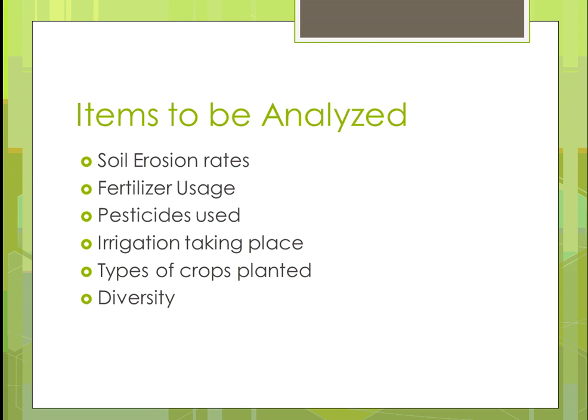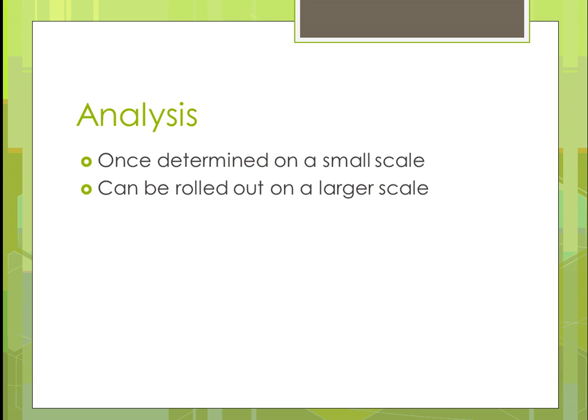Some of the things we should look at and analyze are soil erosion rates — how much of the dirt we're farming is eroding off so we can't use it — fertilizer usage, how much is synthetic versus natural, and similarly pesticides. If there's any irrigation taking place, we should analyze whether it affects the environment. We should also look at the crops being planted and whether there is more diversity, because diversity is certainly going to help sustainability and improve the ecology.